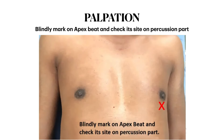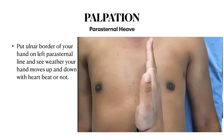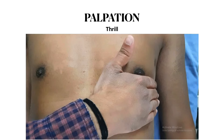After that, blindly mark the apex beat and check its site in the percussion part. For parasternal heave, put the ulnar border of your hand on the left parasternal line and see whether your hand moves up and down with the heartbeat. If your hand moves up and down with heartbeat, parasternal heave is present, indicating right ventricular hypertrophy. For identification of a thrill — thrill is a palpable murmur, which is an abnormal sound heard in auscultation. Warm your hand and put your palm over the precordium; if you feel like worms moving under your palm, thrill is present.